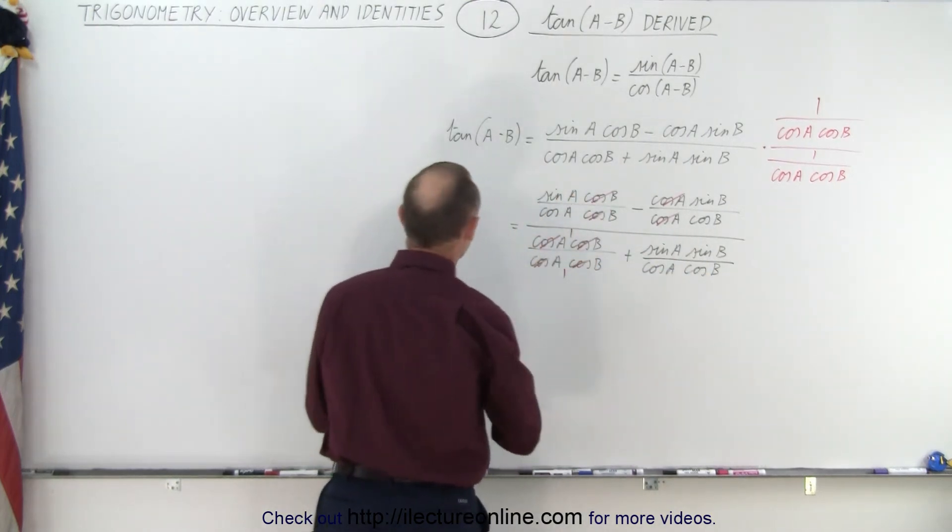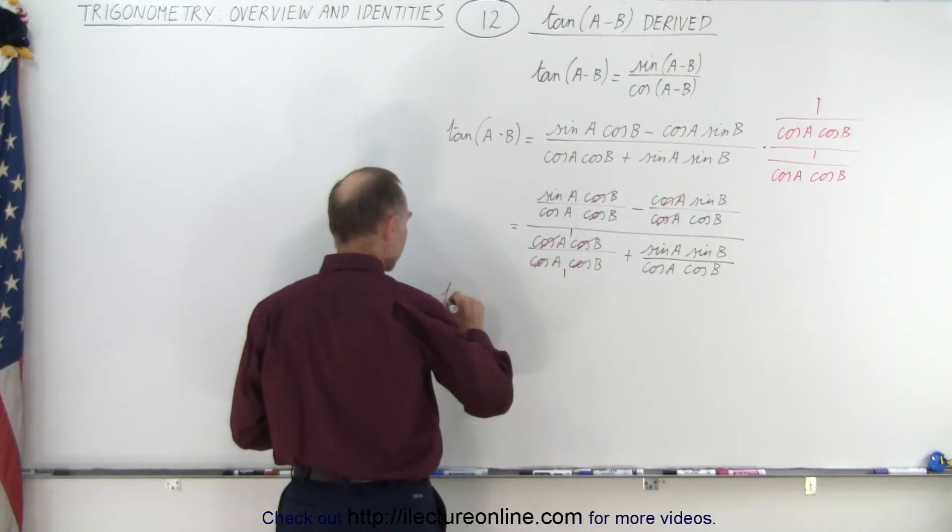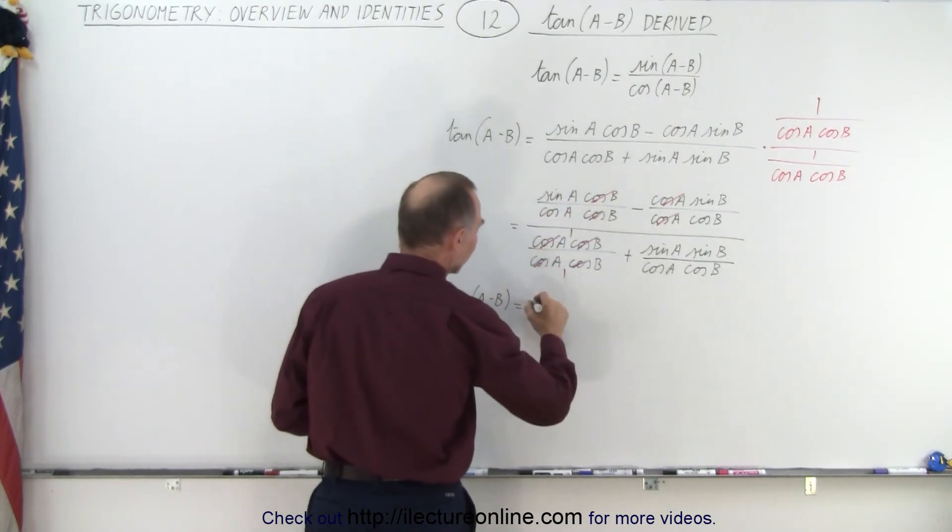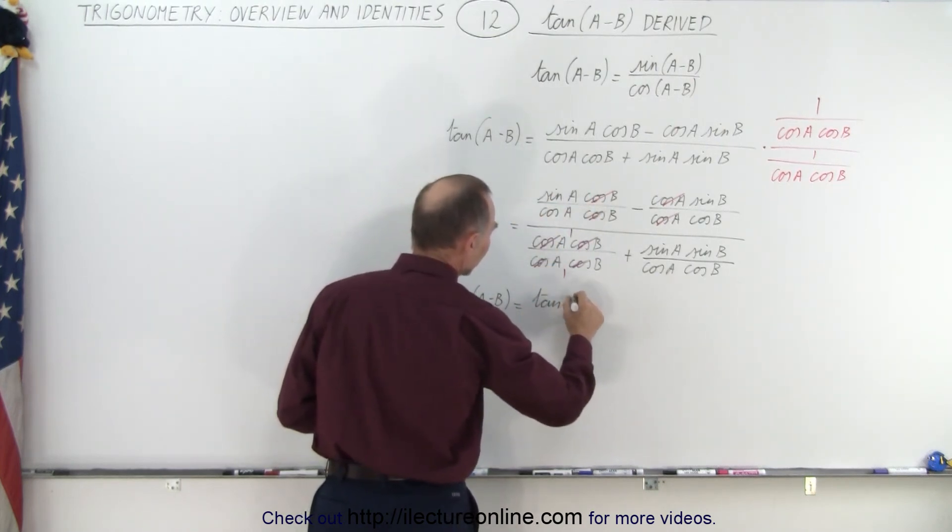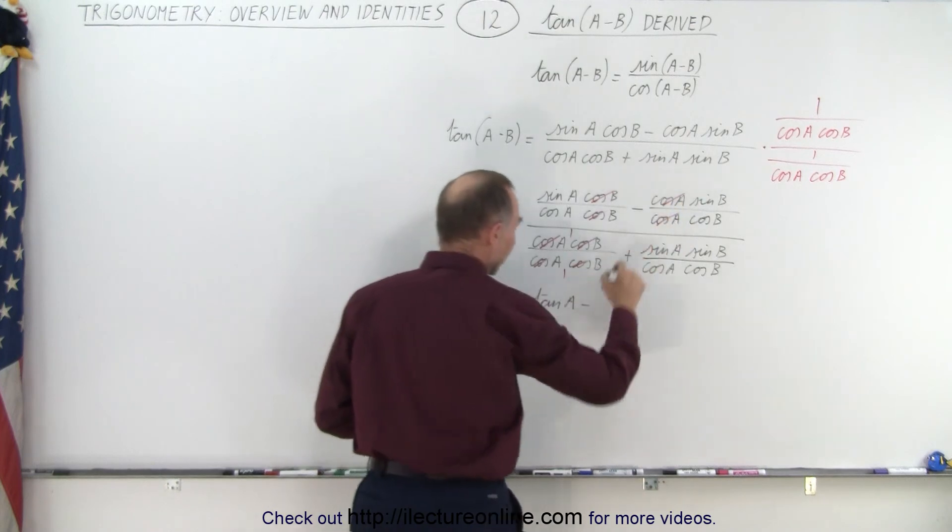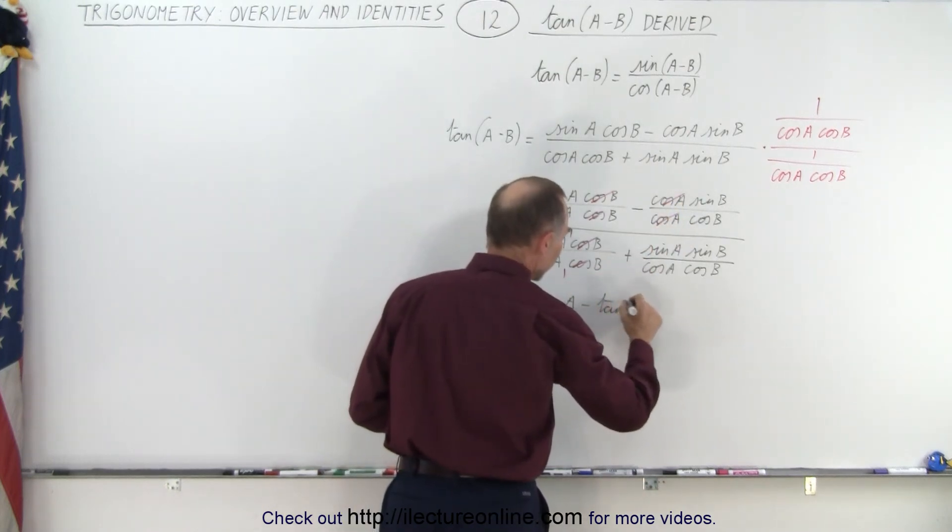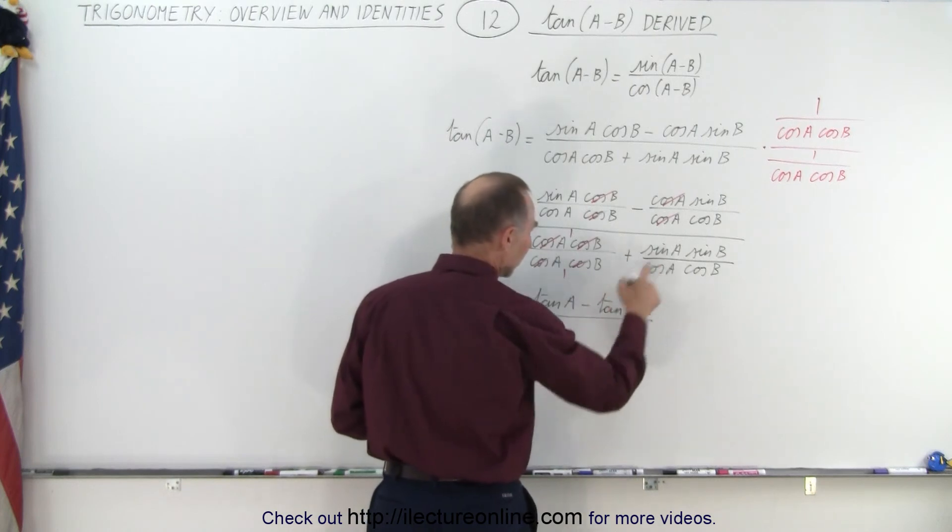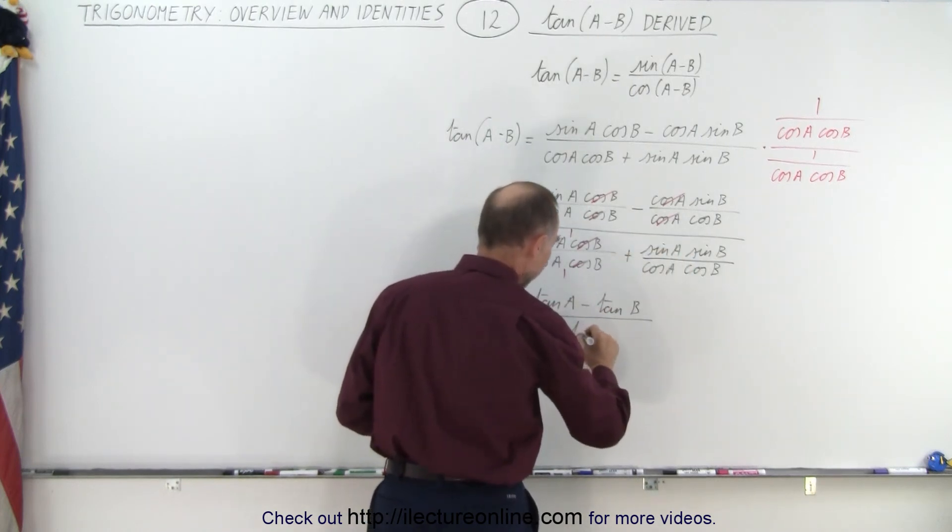But now we can see that the tangent of A minus B can be written as sine over cosine, which is the tangent. So we have the tangent of A minus the tangent of B, divided by one plus the tangent of A times the tangent of B.